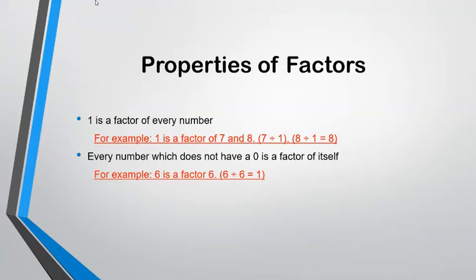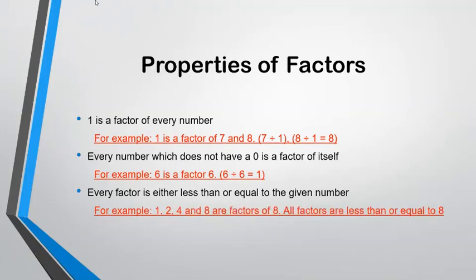For example, 6 is a factor of 6. Number three: Every factor is either less than or equal to the given number. For example, 1, 2, 4, and 8 are all factors of 8. All factors are less than or equal to 8.